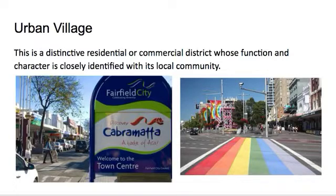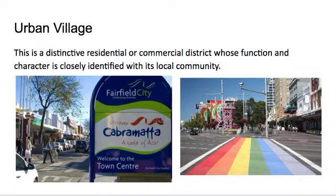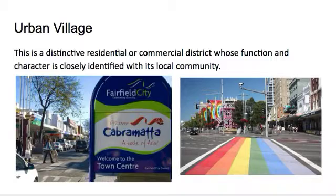Urban Village is a distinctive residential-commercial district whose function and character is closely identified with its local community. On the right we have the Rainbow Crossing in Kings Cross — that area around Oxford Street has a very large gay and lesbian community with shared interests, and hence the community displays the characteristics of an urban village. Cabramatta is known for its Vietnamese culture and a large population of Vietnamese migrants. These two areas are examples of urban villages, relating to the people who live there and the area's form and function because of the community.